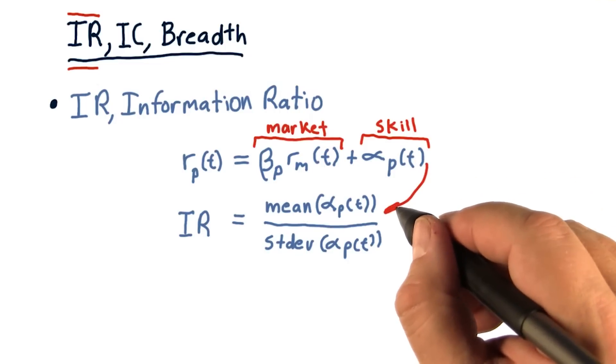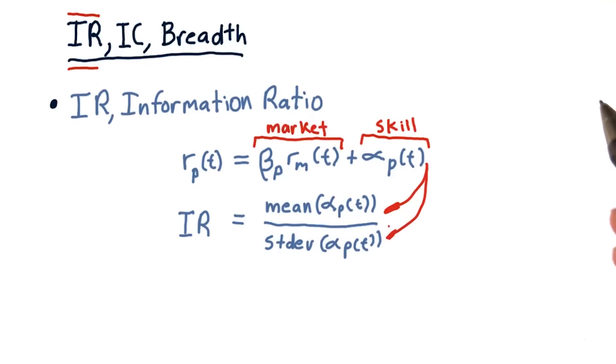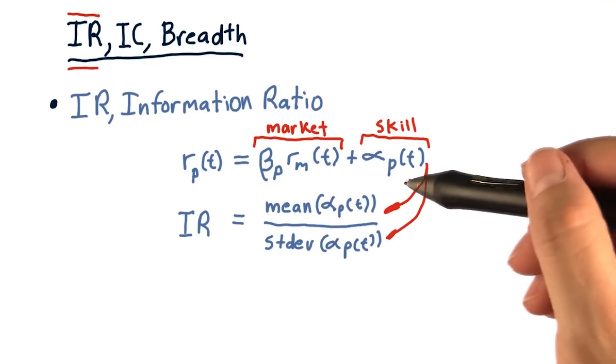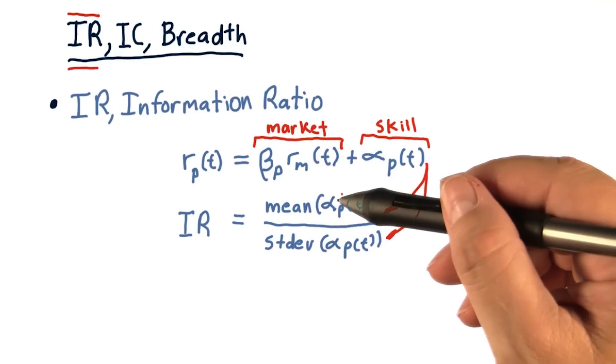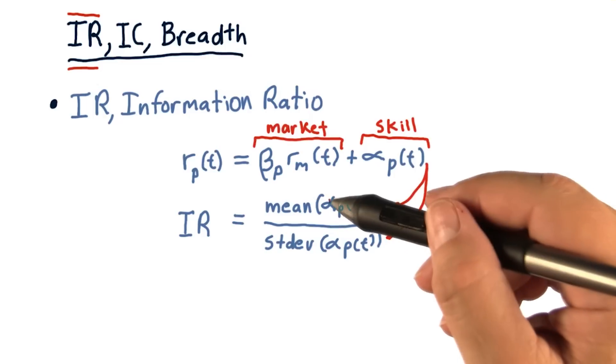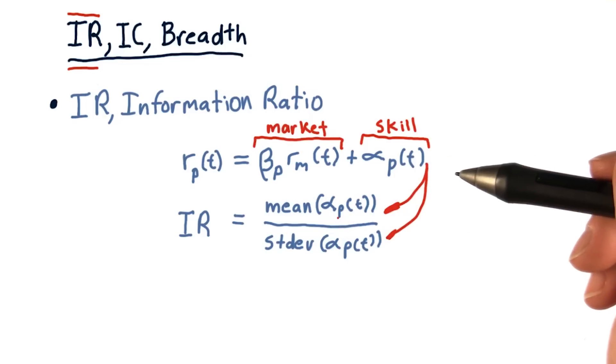So this is our reward component. That's our risk component. And by the way, this is calculated by looking back historically at the daily values of alpha, and we take the mean and the standard deviation of them over time.